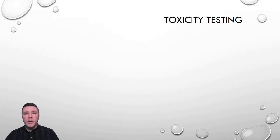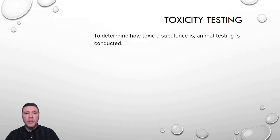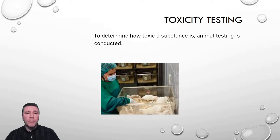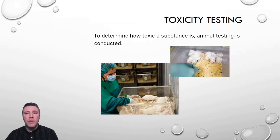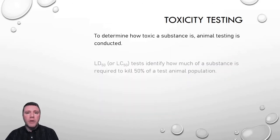Dose-response studies most commonly use animals as test subjects to measure the effects of exposure to a substance. Commonly used laboratory animals include mice and rats, rabbits, fish when testing toxins found in aquatic environments, as well as a variety of invertebrates. Studies like these usually measure mortality as a response, but not all dose-response experiments use death as the measurement gauge. In many cases, scientists are interested in other harmful but sub-lethal effects. A helpful measurement for comparing the harmful effects of different chemicals is the LD50 value.